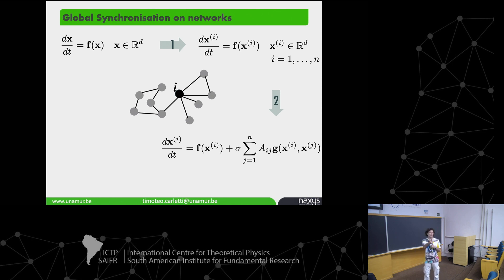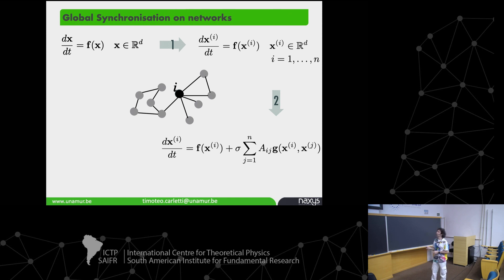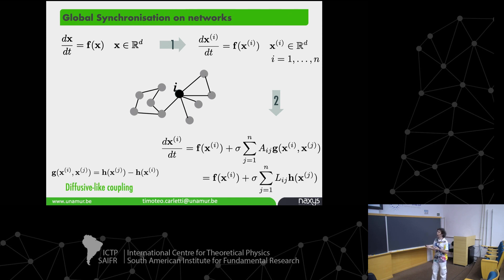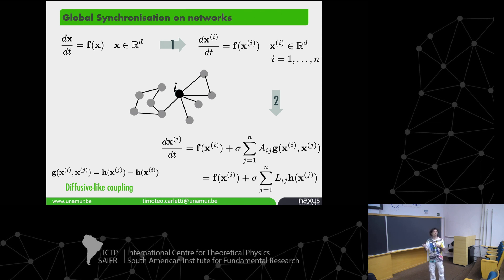You have a coupling function that depends on the state of variables i and j. The most used assumption is that g can be written as the difference of one function h evaluated on state j minus state i. This is called diffusive-like coupling because if h is the identity it's standard diffusion. The key property: plugging this in gives the Laplacian matrix L. Once x_i equals x_j, this function vanishes — that's necessary to even speak about synchronization.